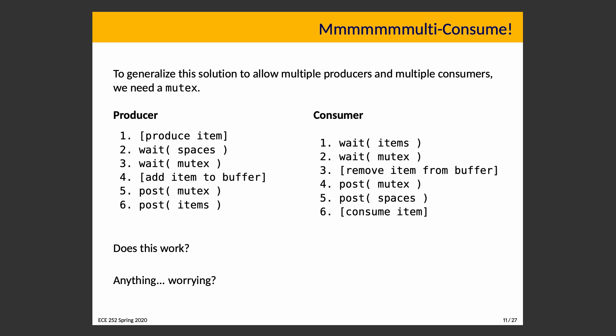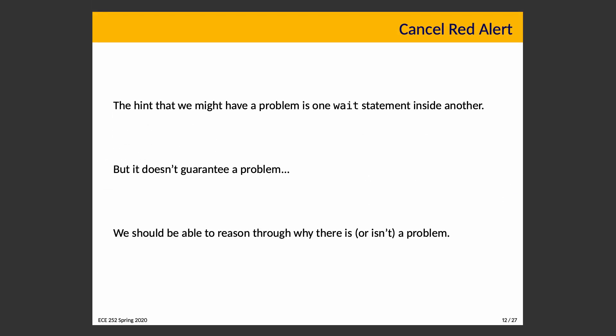We need to choose an initial value for mutex — it's one. Does this do what we expect? You may notice we have nested waits — both the producer and the consumer have nested waits. The producer's are lines two and three, the consumer's are one and two. Those are concerning and should set off alarm bells. You should say this is potentially a problem. We should however be able to reason through why there is or is not a problem.